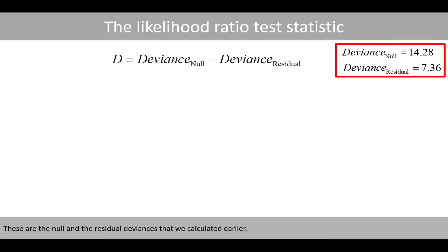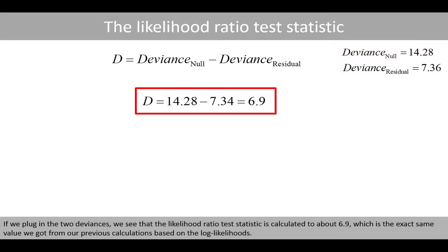Using the null and residual deviances that we calculated earlier, if we plug in the two deviances, we see that the likelihood ratio test statistic is calculated to about 6.9, which is the exact same value we got from our previous calculations based on the log likelihoods.